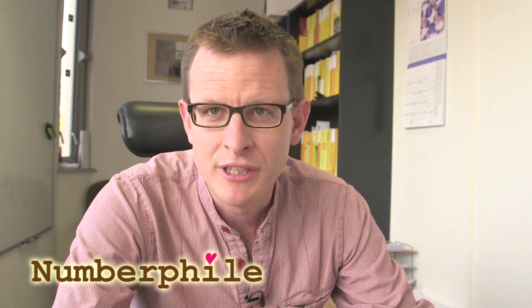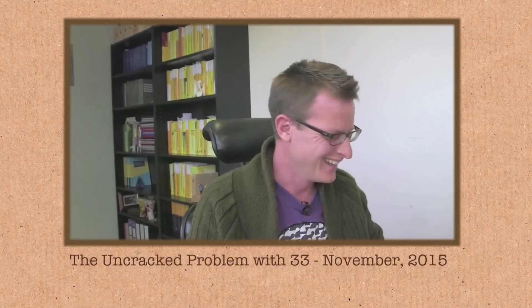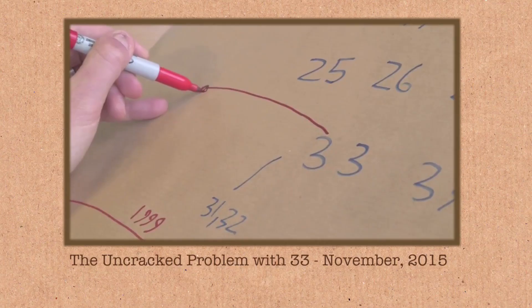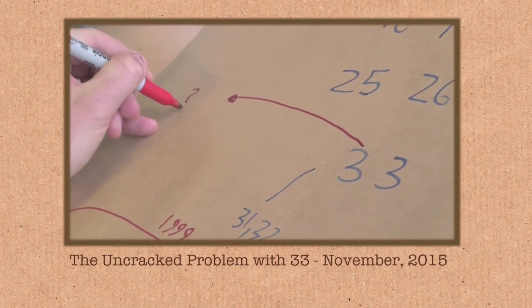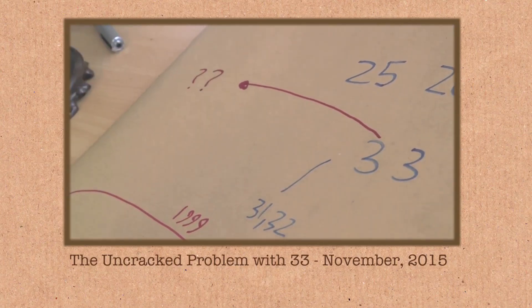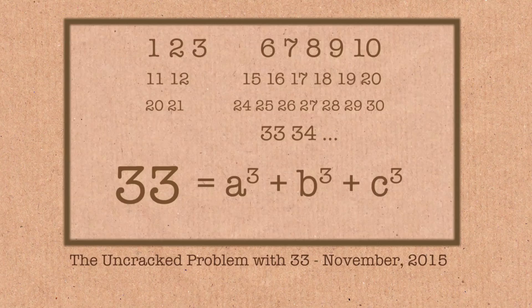A short while ago we made a Numberphile video about a problem with Diophantine equations and whether numbers can be written as a sum of three cubes. We still don't know an answer to that one. We've not yet been able to find any integers which when we sum their cubes you get 33.